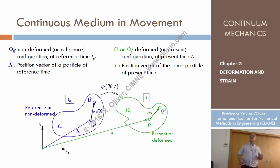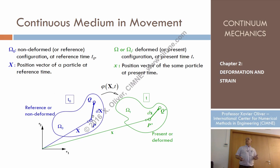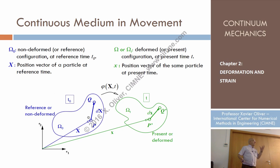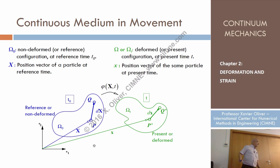Now let's consider another particle Q in the infinitesimal neighborhood of P. The relative position of P and Q is given by a differential vector dX. There are many such particles Q — it could be here, or here, or any particle in the infinitesimal neighborhood of P.